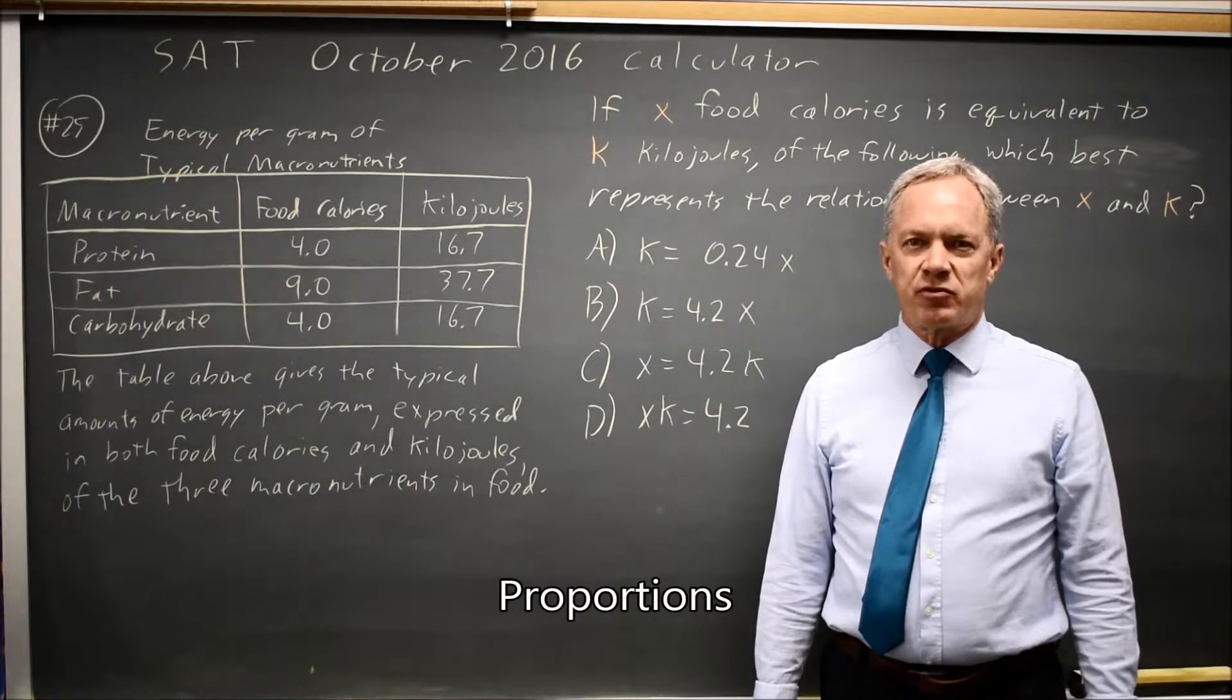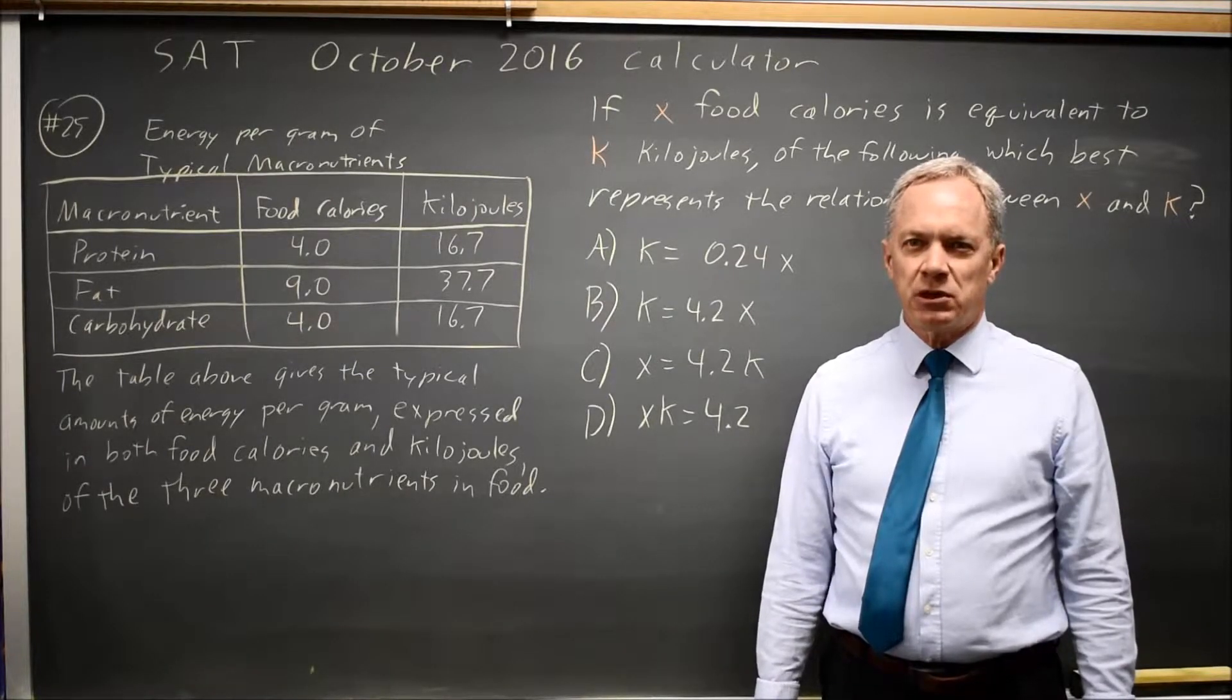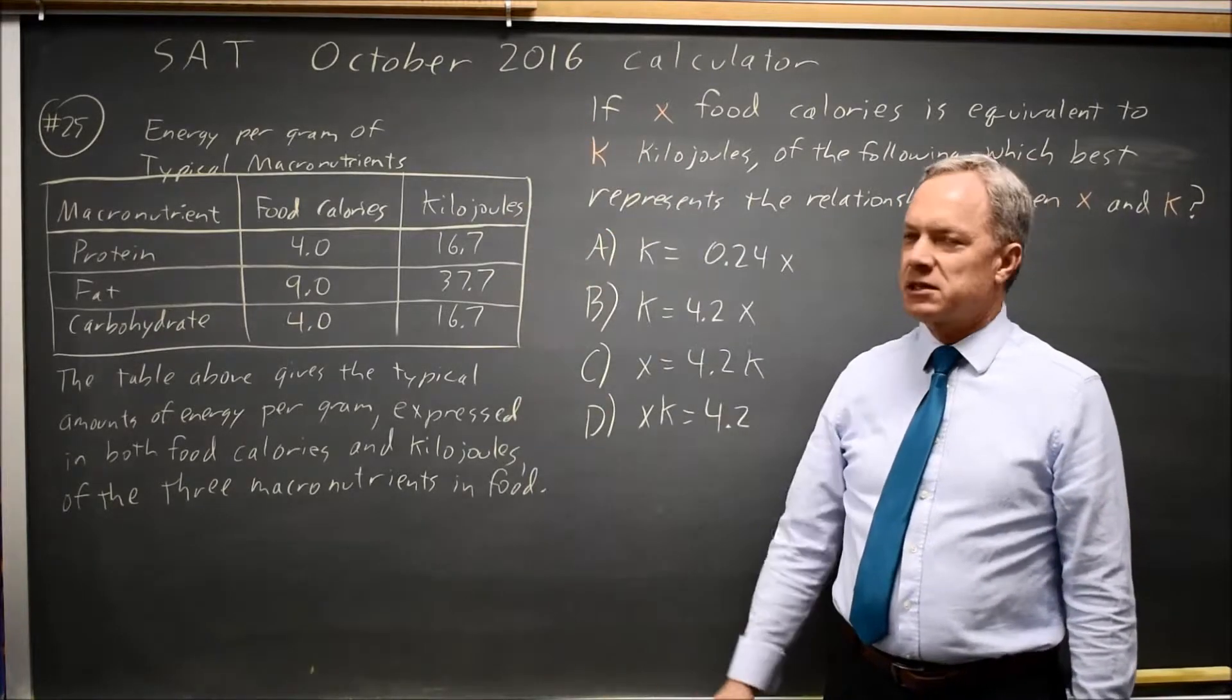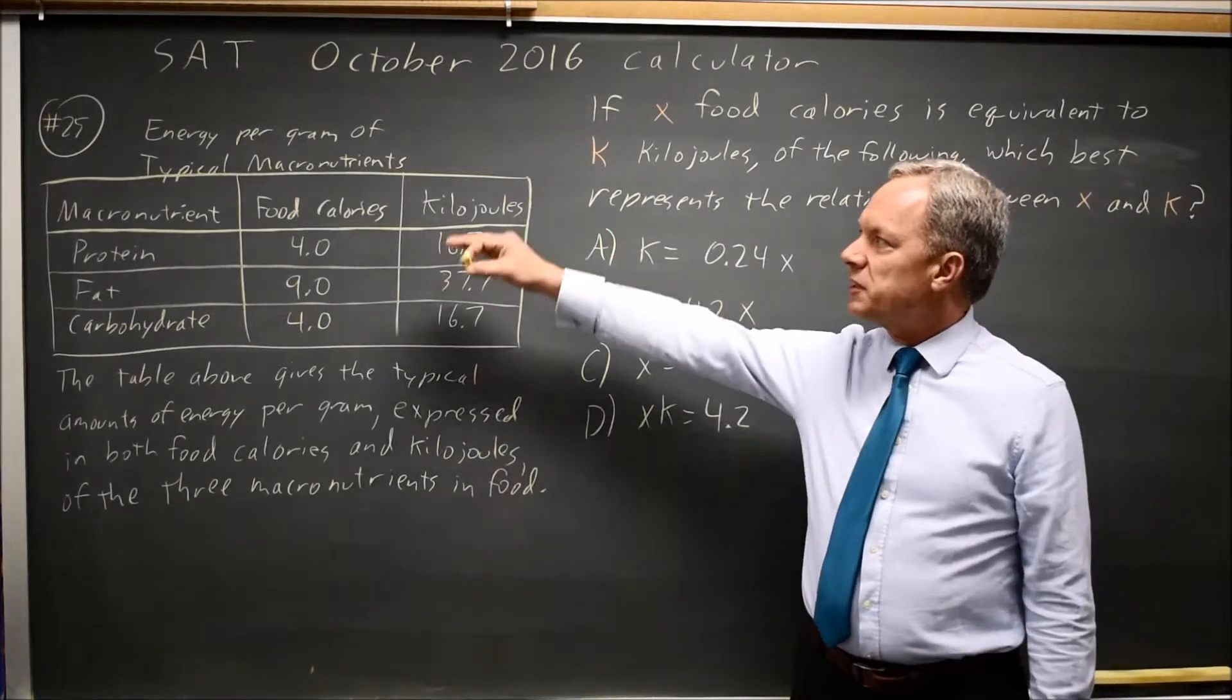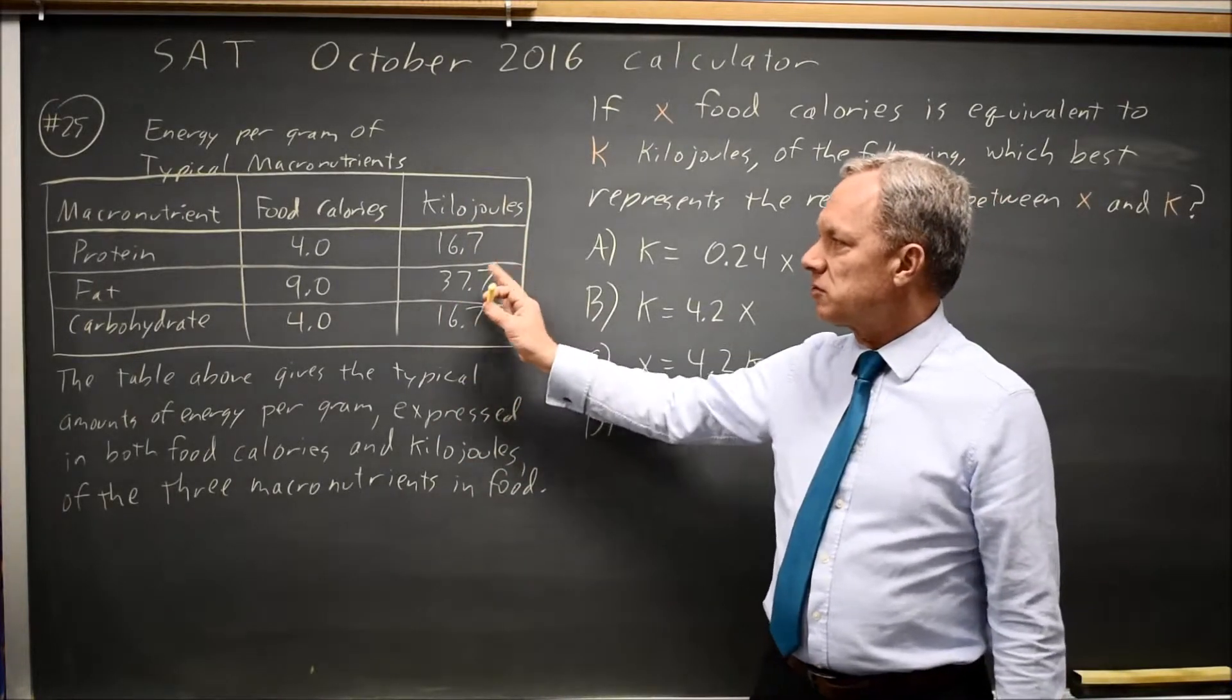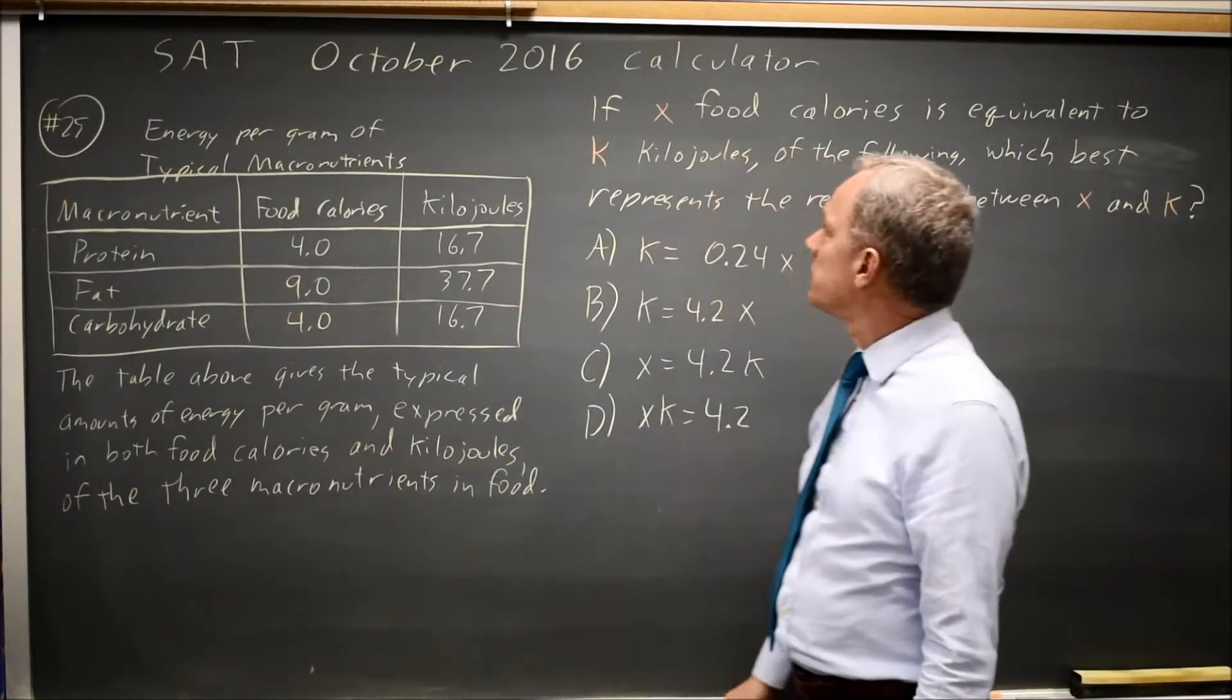This is practice test 7 from the 2018 College Board Prep Book and also the October 2016 SAT that was administered. We have a table of values for energy in calories or kilojoules for protein, fat, and carbohydrates.